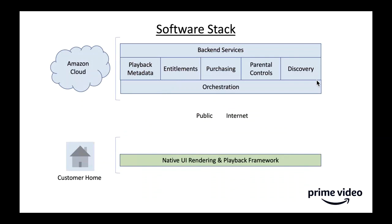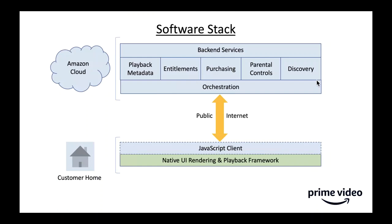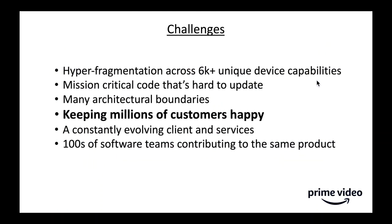Here's a simplified view of the Prime Video software stack. At the bottom is the customer's home, with a TV or console running our native UI rendering and playback framework — responsible for storage, crypto, DRM rendering, and playback initialization. When the Prime Video app starts, it pulls down the latest JavaScript client from the Amazon cloud, which communicates over the internet with the orchestration layer and backend services, proxying requests for content and UI layouts.